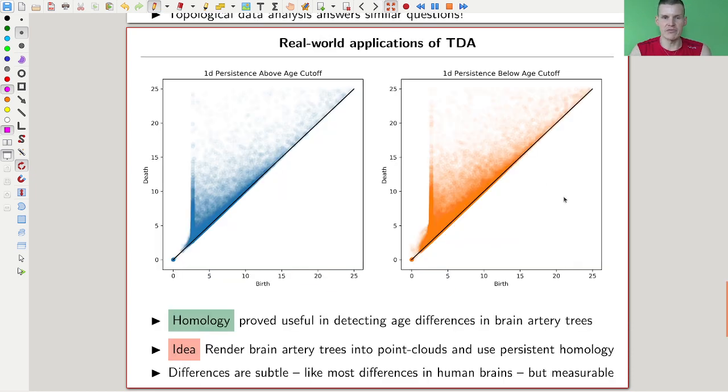And this turns out to be really useful. I recently found a paper which used persistent homology to detect age differences in brain artery trees. Essentially they ran it over it. And whenever an artery tree closes into a circle, something happens in the persistent homology because persistent homology exactly measures those guys.